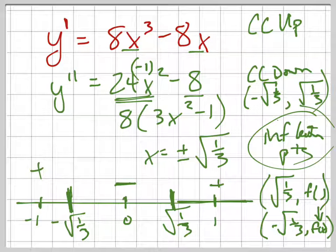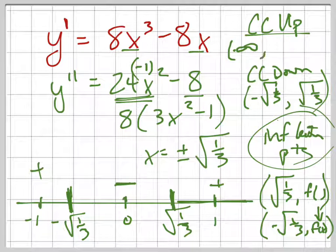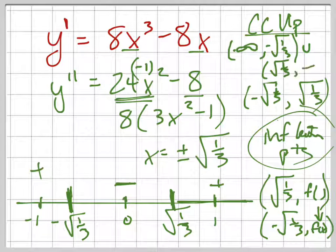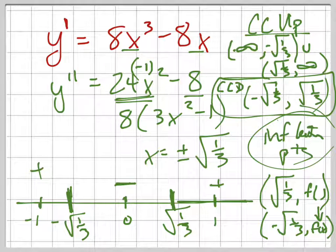So what does that mean? It means it's concave up from negative infinity to negative square root of 1 third, union positive square root of 1 third, comma, positive infinity. Sorry for the chicken scratch, but hopefully you're able to follow all that. That's how you do that problem in 8 minutes.